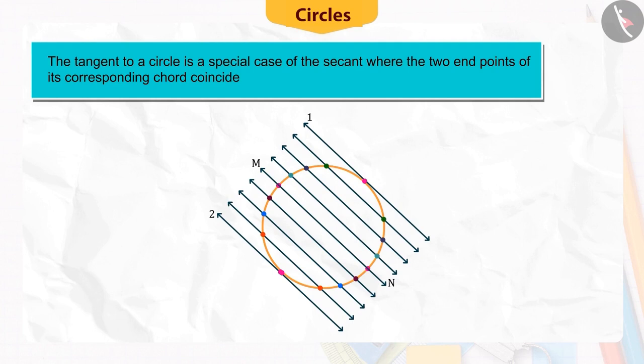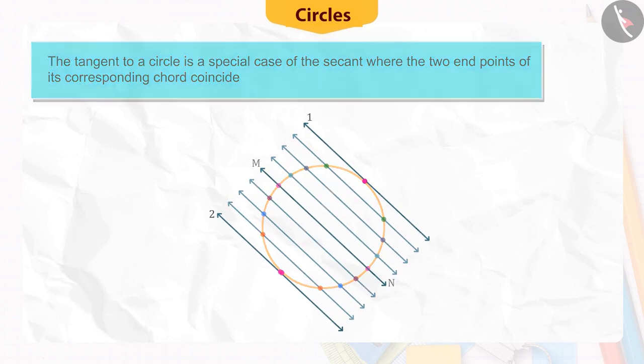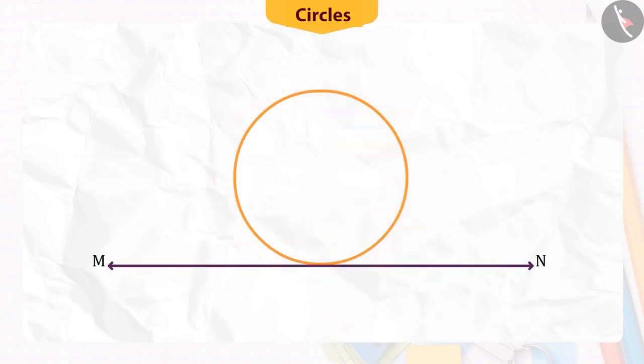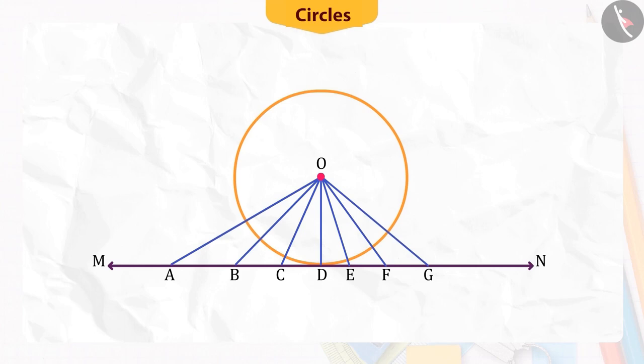Let us see another activity. Draw a circle and its tangent on a piece of paper. Now, if from the center O of the circle, some lines to the tangent are drawn, which are OA, OB, OC, OD, OE, OF, OG and OH.